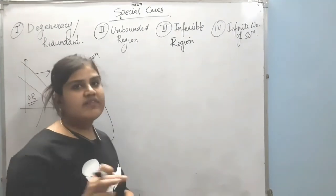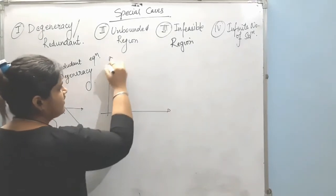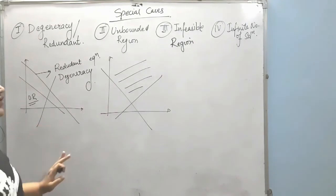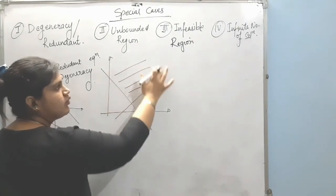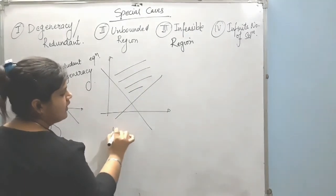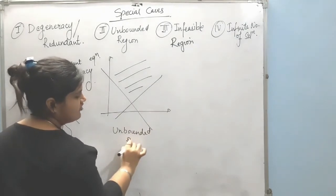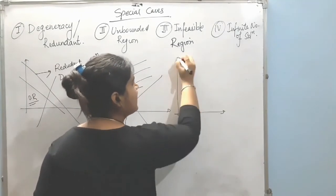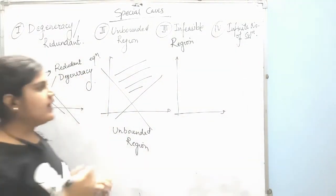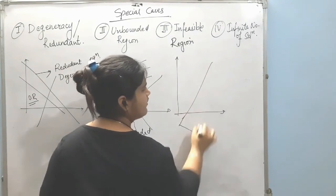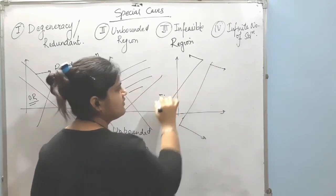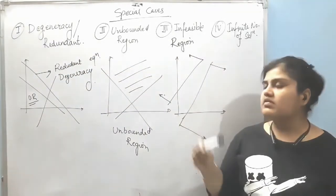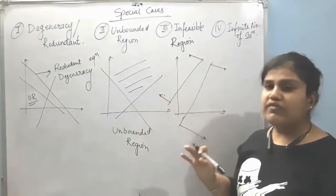The second special case is the unbounded region: when the structural constraints form an optimal region that does not have a closed polygon boundary, it is the condition of an unbounded region. The third special case is the infeasible region: when two constraints have optimal regions on opposite sides with no common region, we cannot find any optimal solution and this is called the infeasible region.